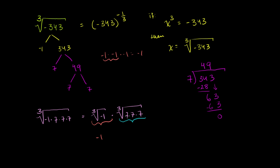What times itself 3 times is equal to 7 times 7 times 7? Well 7, right? This is literally 7 times itself 3 times. So the second part is 7. So the answer's going to be negative 1 times 7, or negative 7.